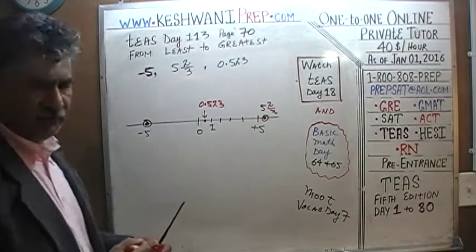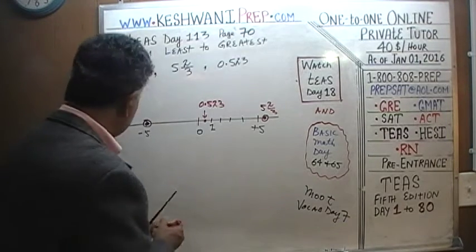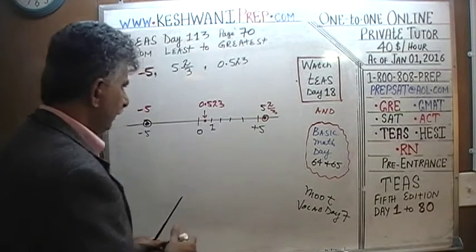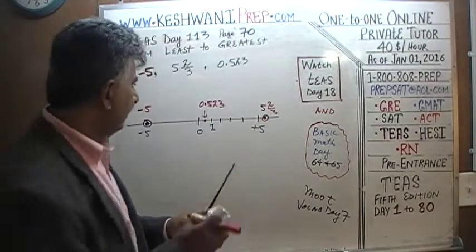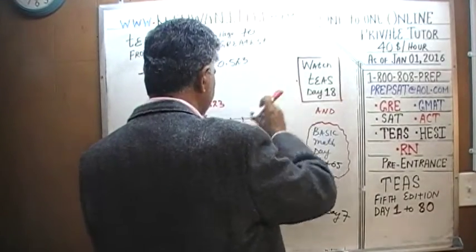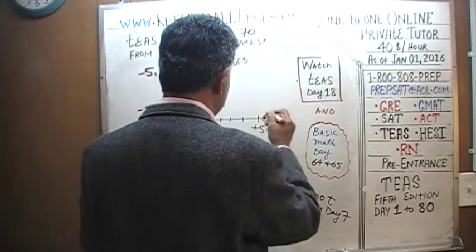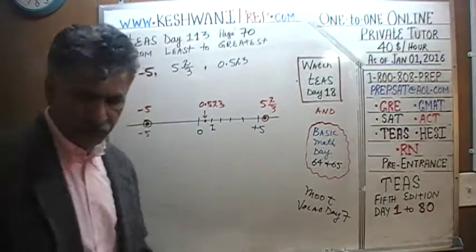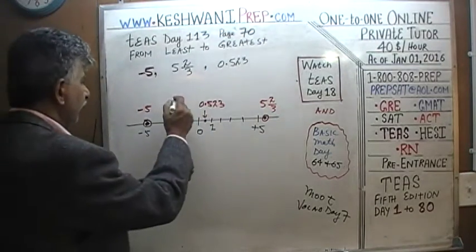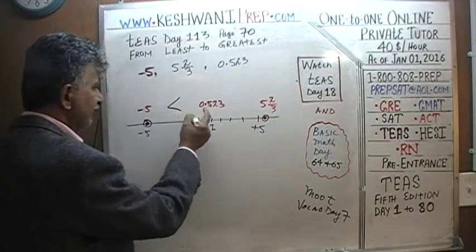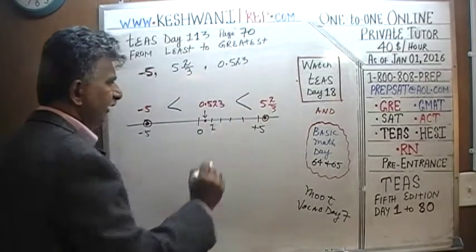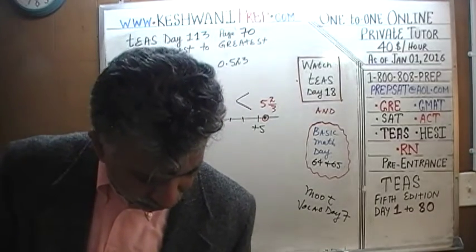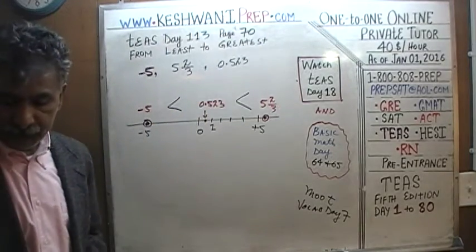We have done it. The answer is: negative 5, then 0.523, then 5 and 2 thirds. It turns out negative 5 is the smallest, negative 5 is less than 0.523, and 0.523 is in turn less than 5 and 2 thirds. They wanted us to arrange from least to greatest in increasing order. We have done so. End of the story.